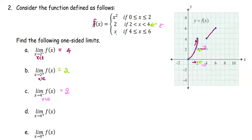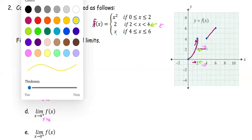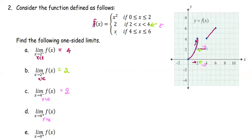For part D, we find the limit of f of x as x approaches 4 from the right, or as x is slightly greater than 4. We look at the graph — as x approaches 4 from the right, we go with the function defined as f of x equals x for x greater than or equal to 4. Looking at the right-side piece of the graph, the function value, or y, is approaching the value 4.